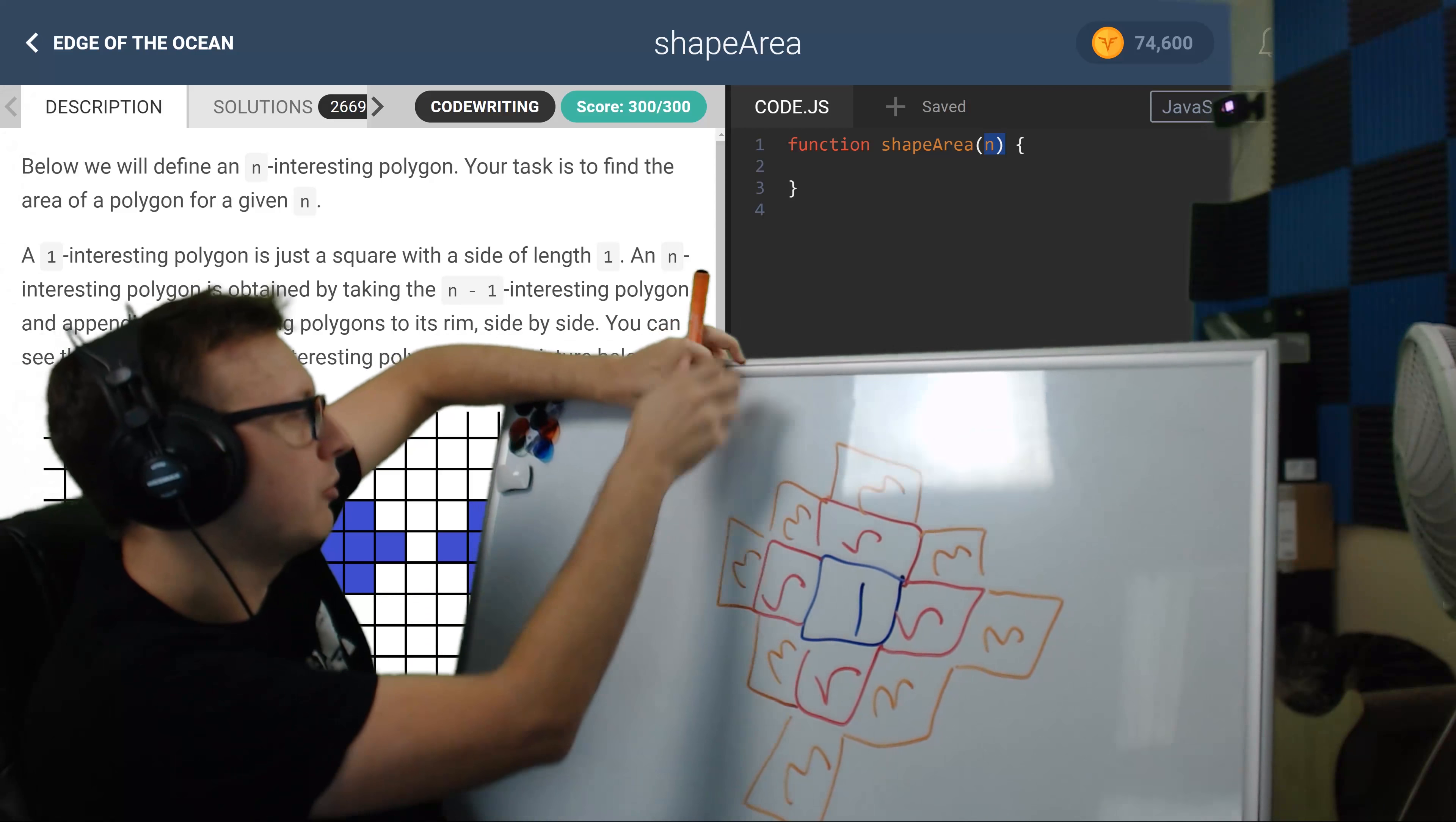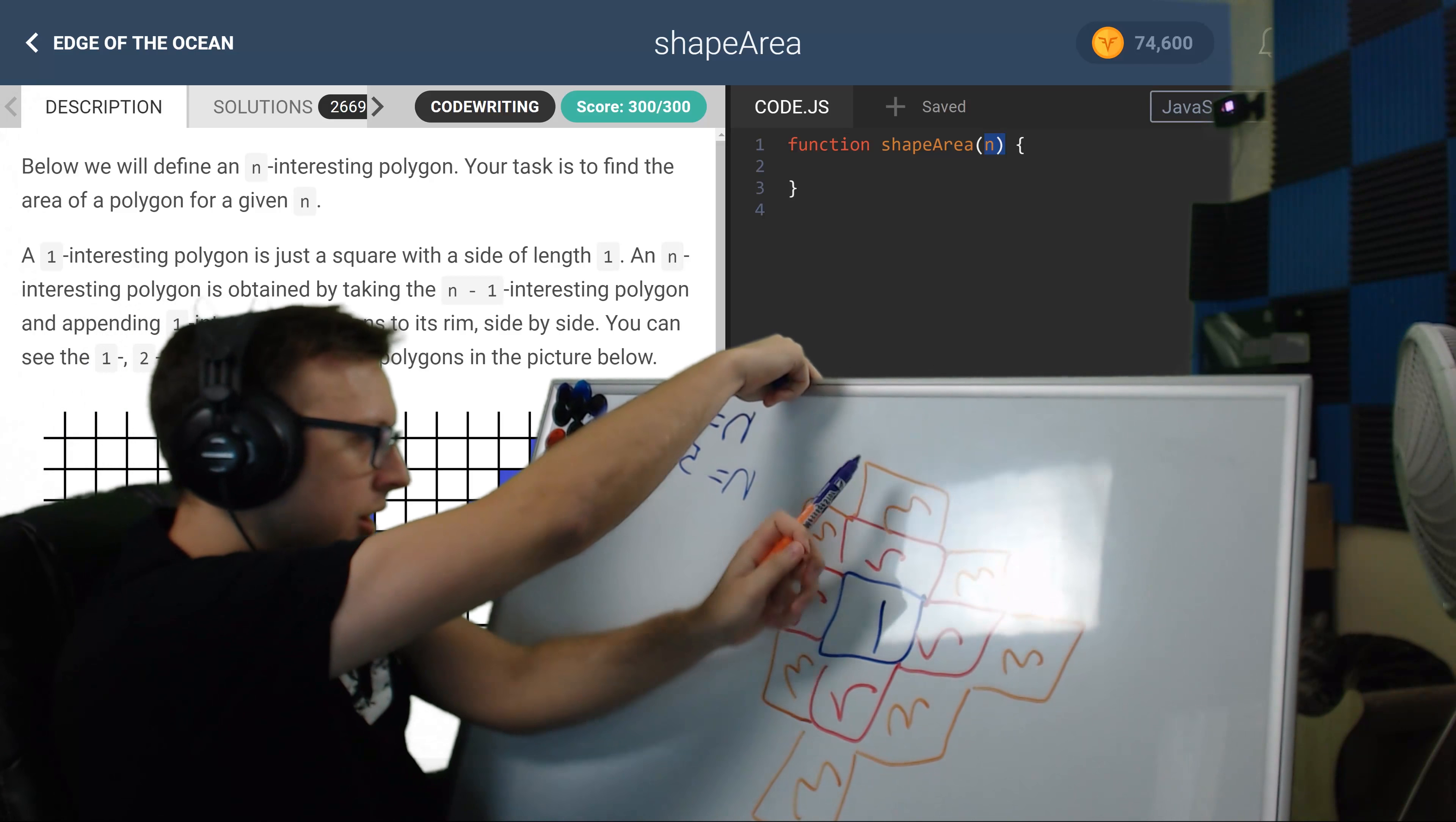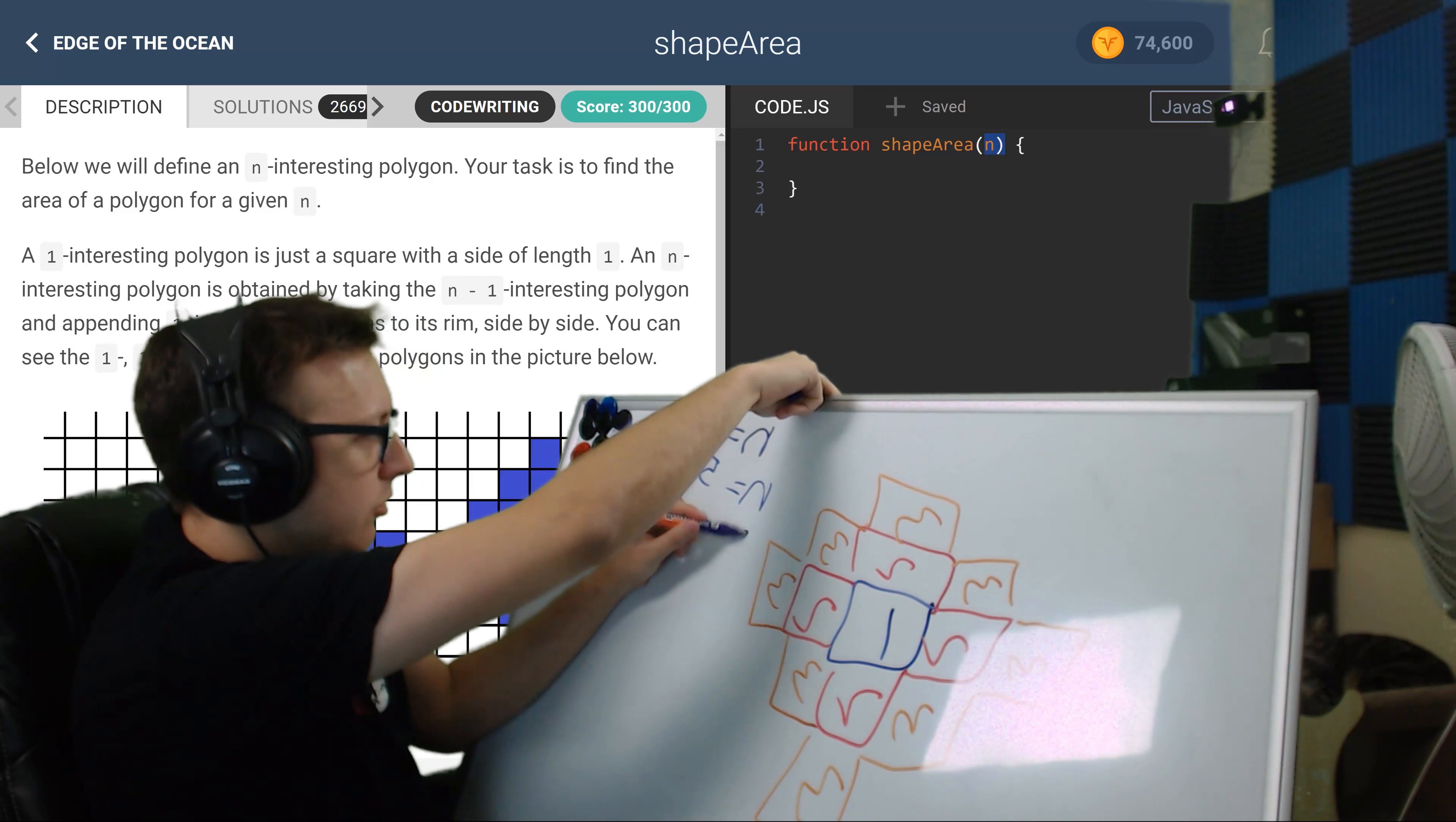So let's try and draw some conclusions from what we're looking at. When n is equal to one, the area is one. When n is equal to two, the area is five. And when n is equal to three, we have one, two, three, four, five, six, seven, eight. So eight, excuse me, so n is equal to 13.